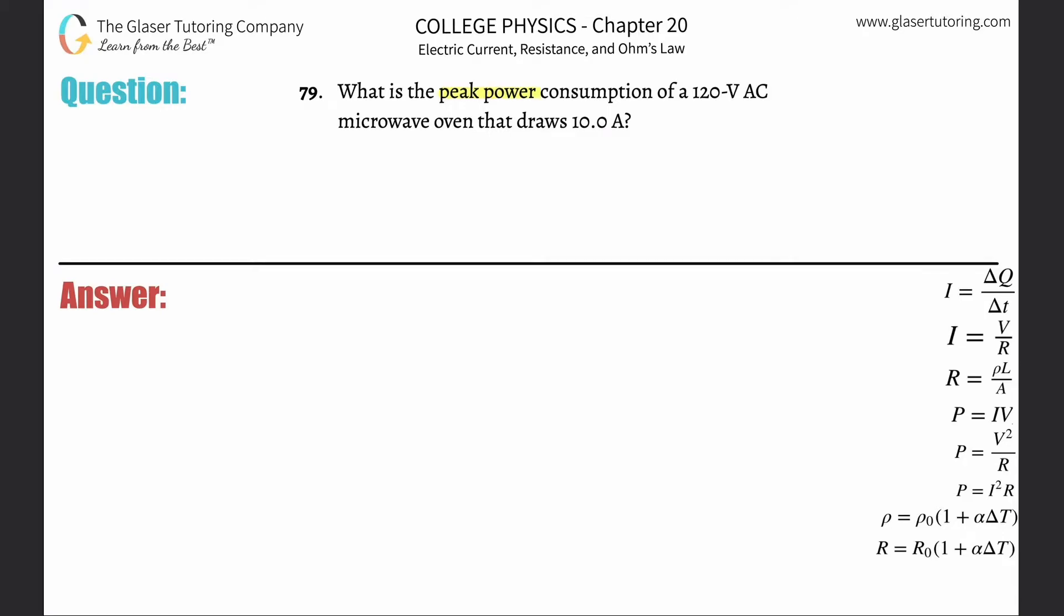Number 79: what is the peak power consumption of a 120 volt alternating current microwave oven that draws 10 amps?